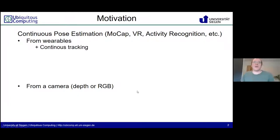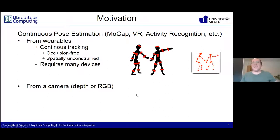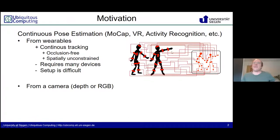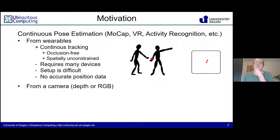With wearables, we have continuous tracking, which means we are occlusion-free and spatially unconstrained. But we need many devices to do so, like shown here, and the setup is very difficult. Just imagine we have to assign every IMU to a certain limb. And thus, reality looks more like this — you only have one or two devices, and thus you can only see one limb. Furthermore, we don't have accurate position data here.